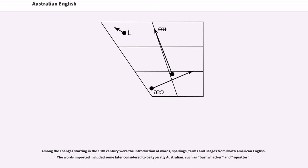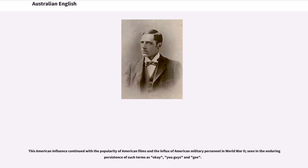Among the changes starting in the 19th century were the introduction of words, spellings, terms and usages from North American English. The words imported included some later considered to be typically Australian, such as bushwhacker and squatter. This American influence continued with the popularity of American films and the influx of American military personnel in World War II, seen in the enduring persistence of such terms as OK, you guys and gee.